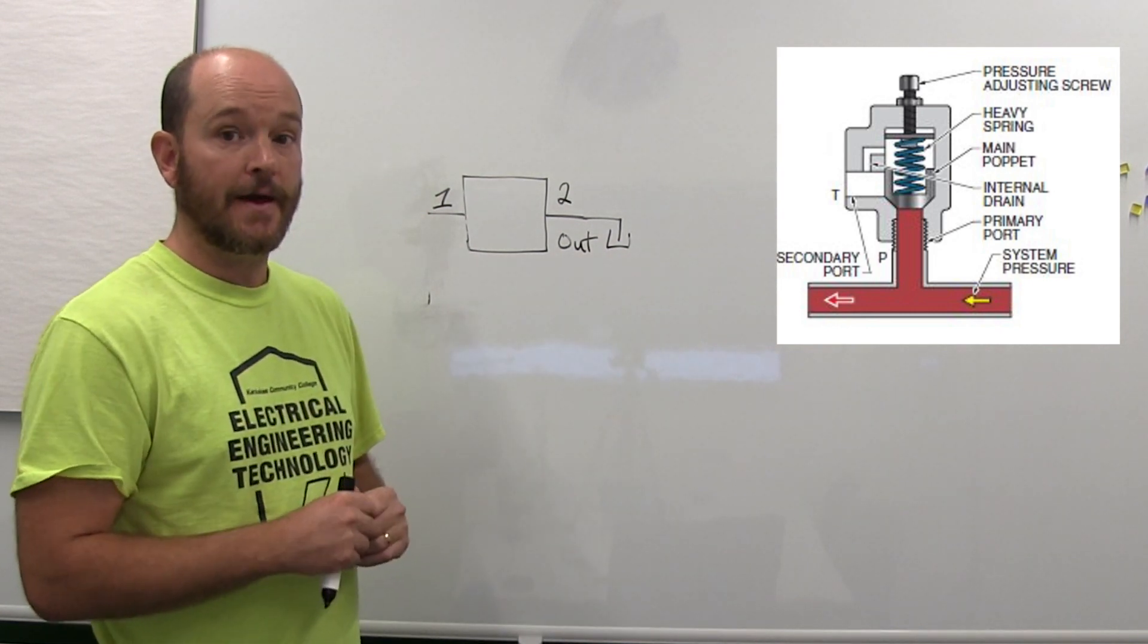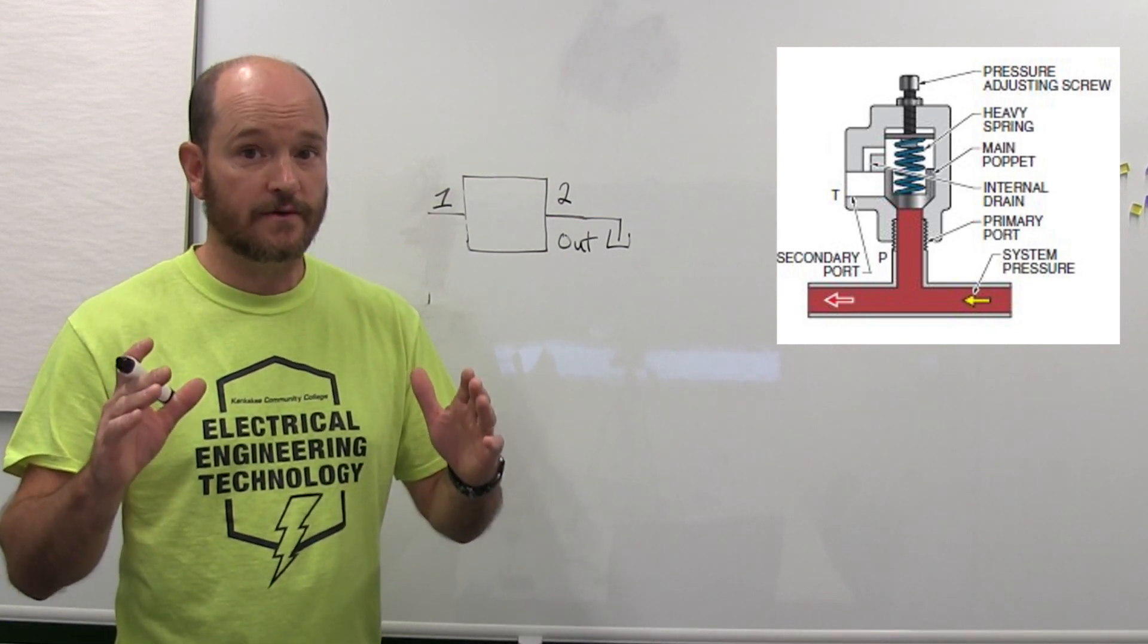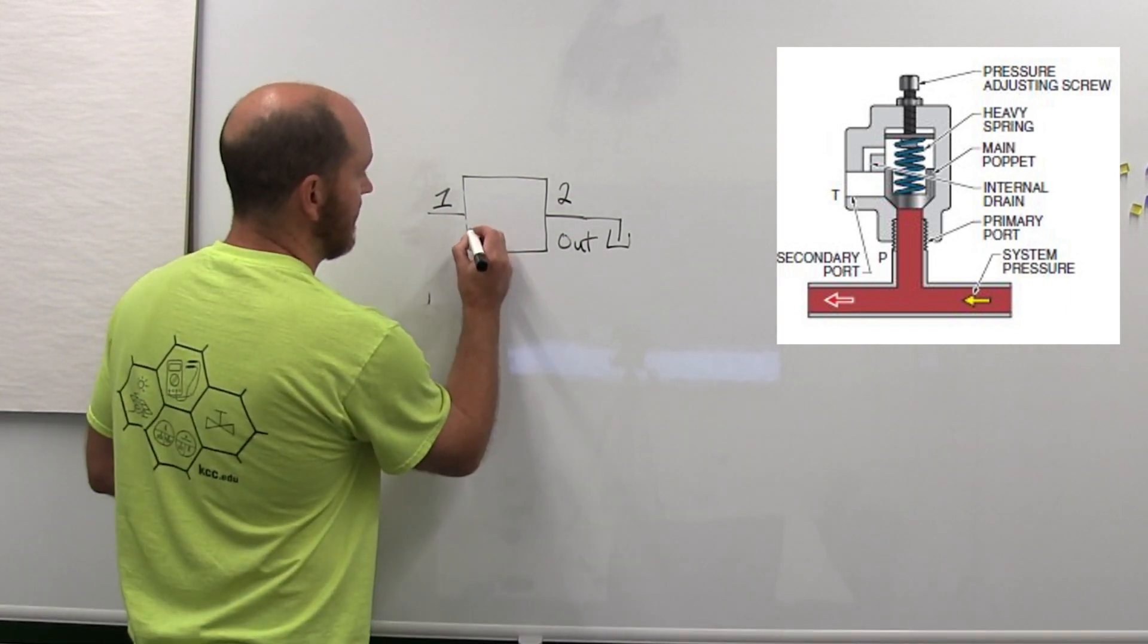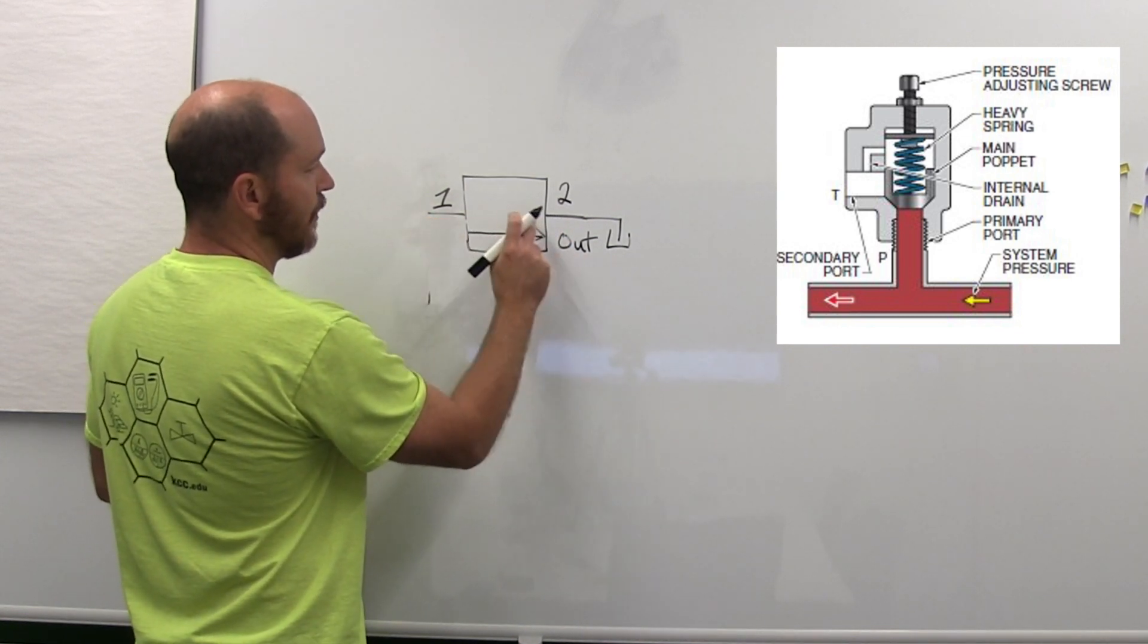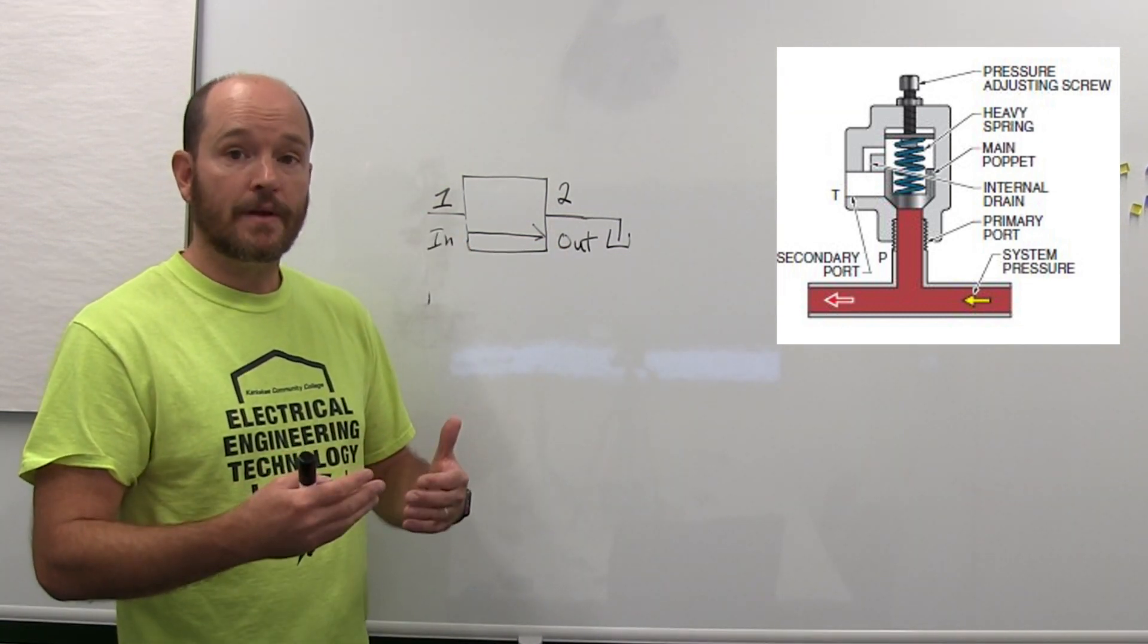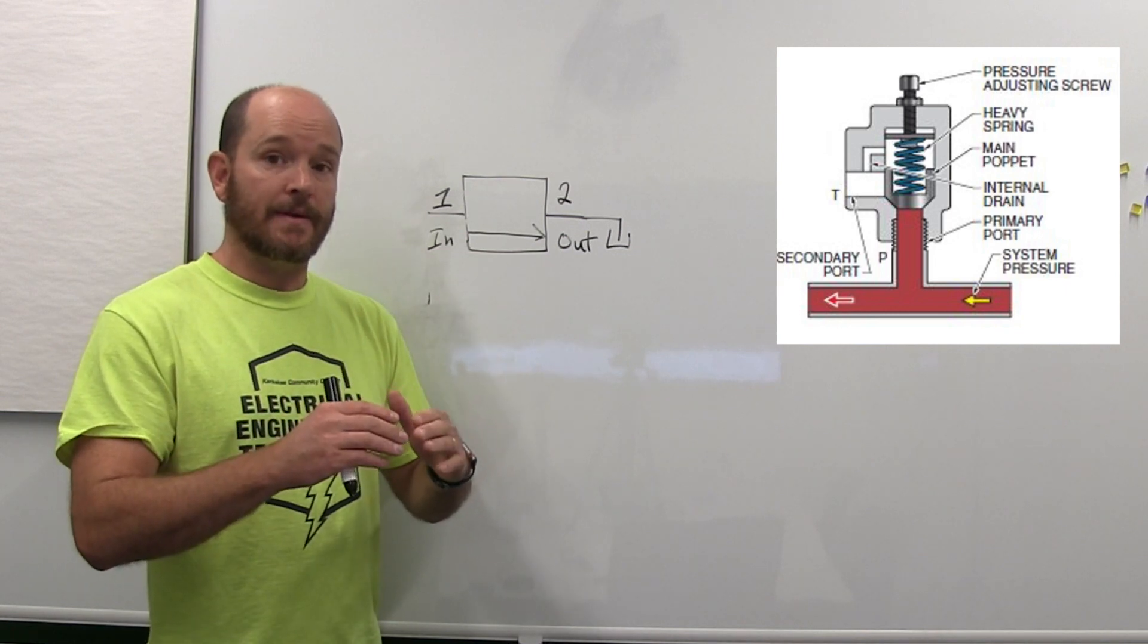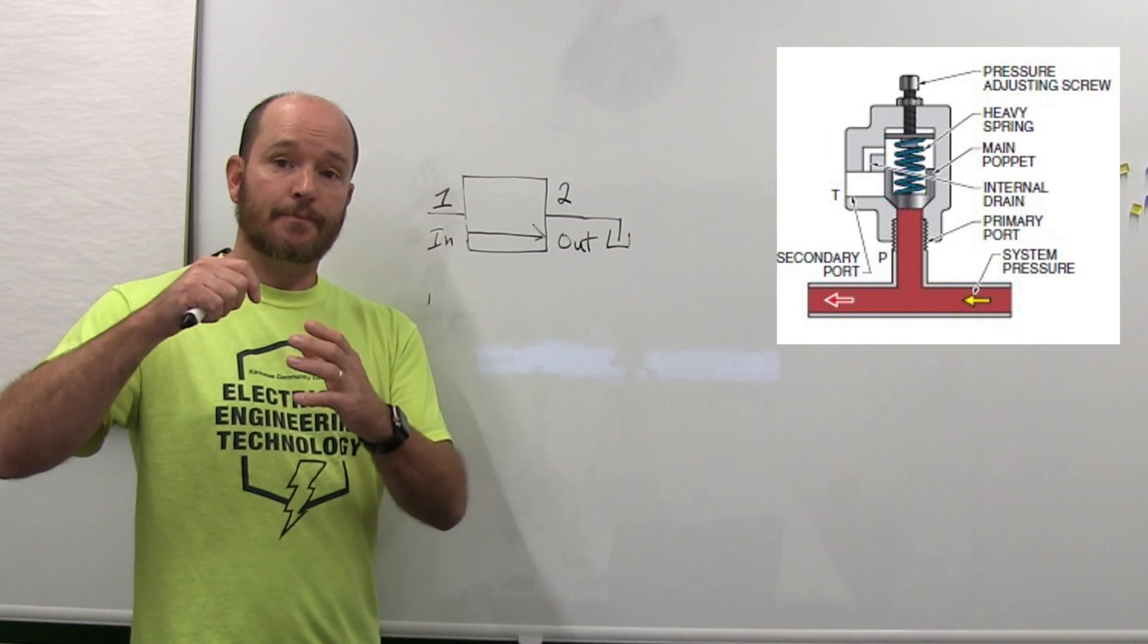The next part of a pressure relief valve is that they are normally closed valves. The way that is represented in this schematic diagram is with an arrow that is not lined up with the input and the output. If this was a normally open valve, the poppet would be in line, but this is normally closed.